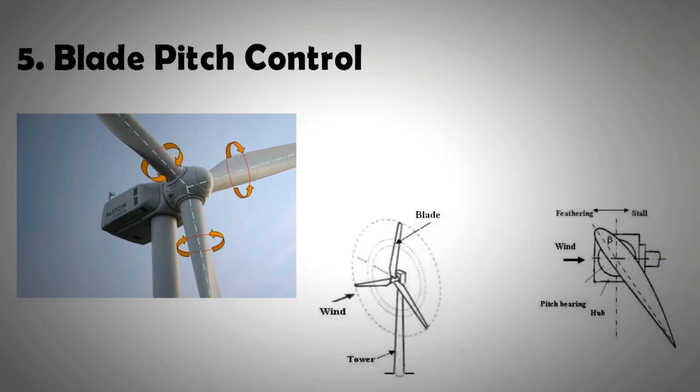The blade angle can also be changed to minimize the lift and drag during gales or stormy wind conditions. This reduction of the angle of attack in high wind conditions is termed as feathering. Small-scale wind turbines do not have such mechanisms to turn the blades. They normally apply brakes and completely stop at high wind speeds.